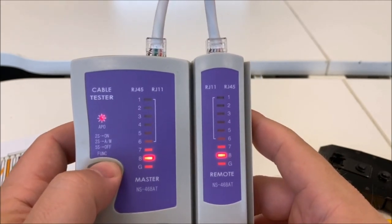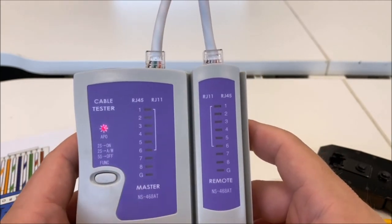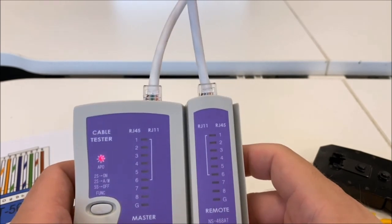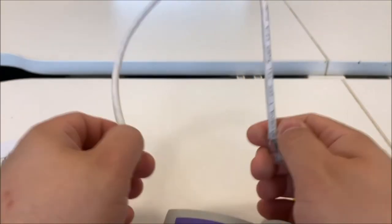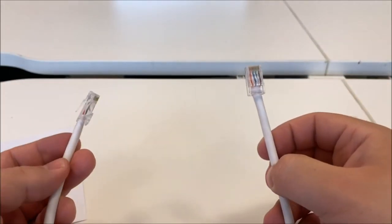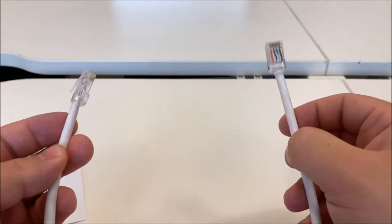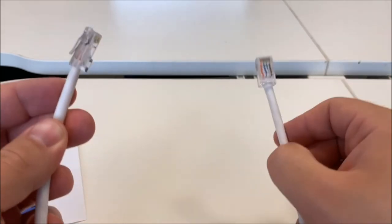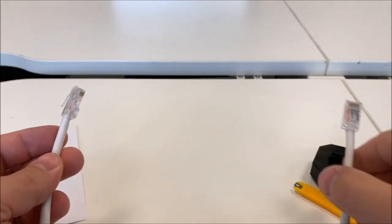So that is basically how you build an RJ45 cable, ethernet cable, that you can use. And this one, as you can see, is very short, normally used for patching up switches inside server racks. So hope you enjoyed the video, and hopefully we'll see you at Colchester Institute. Thank you very much.